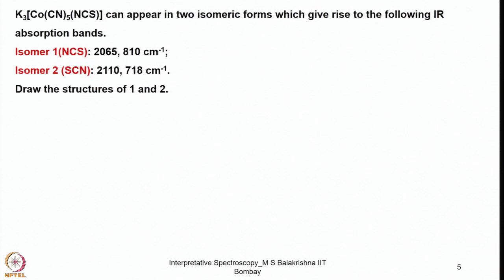Let us look at another example: an octahedral cobalt complex — pentacyanothiocyanatocobaltate. Because of linkage isomerism, it can appear in two isomeric forms giving the following IR absorption bands: Isomer 1 shows 2065 and 810 cm⁻¹, and Isomer 2 shows 2010 and 700 cm⁻¹. By comparison with our previous discussion, we can judge that in Isomer 1, N is binding, whereas in Isomer 2, S is binding. The corresponding octahedral isomers can be written accordingly.